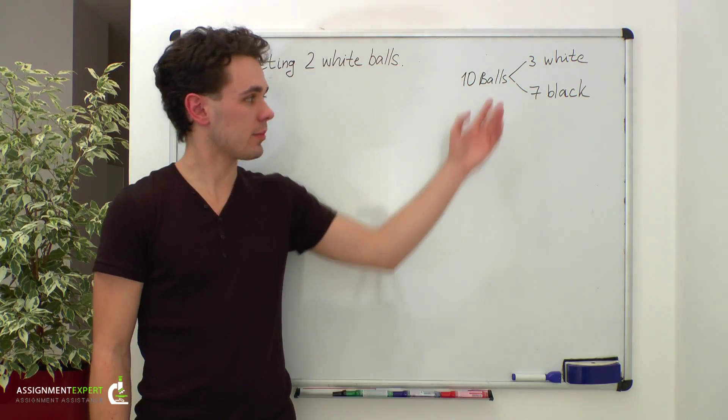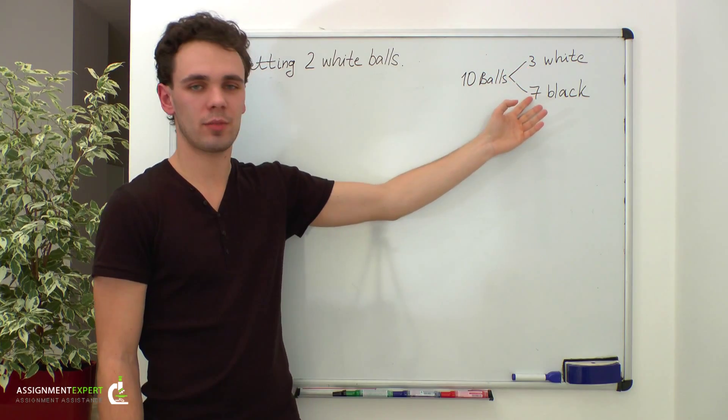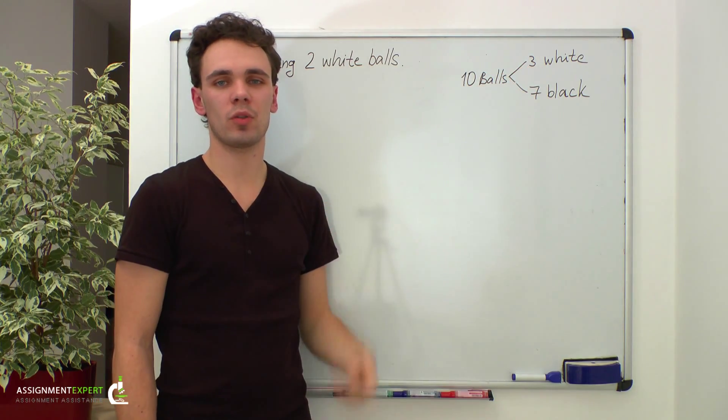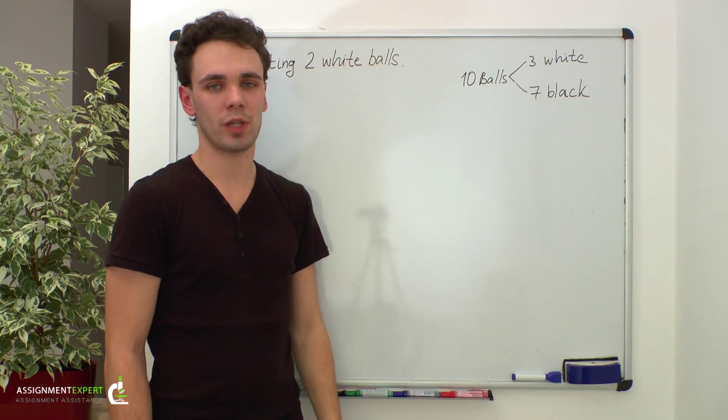Let's imagine that we have ten balls in the urn. Among them, three are white and seven are black. Suppose we take two balls out of the urn simultaneously. What is the probability that they are both white?